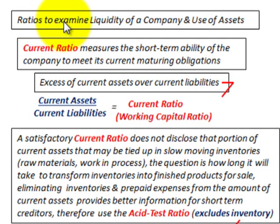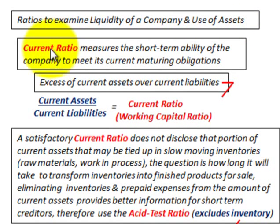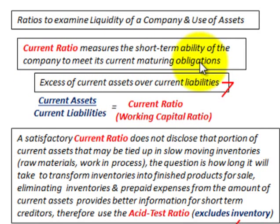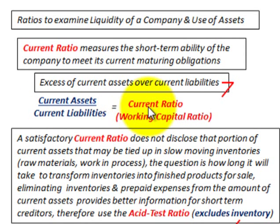What we're going to be going over here are some ratios to examine the liquidity of the company and also the use of its assets. We'll start with the current ratio, which measures the short-term ability of the company to meet its current maturing obligations. That is current assets divided by current liabilities — also referred to as the working capital ratio.